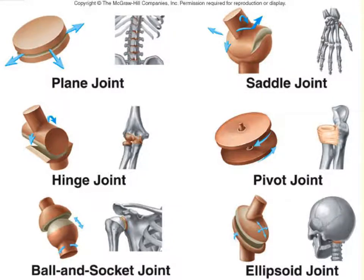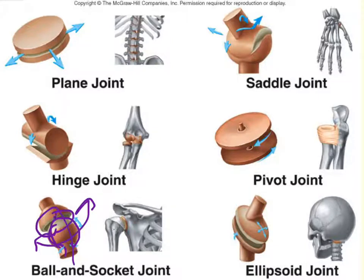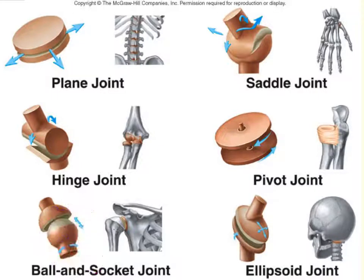Next is the ball and socket joint. The spherical end of one bone fits into a socket in the other, and that bone can move in any plane — including rotation along that bone. It is the most freely movable joint of all six. Ball and socket joints are found in the shoulder and the hip.